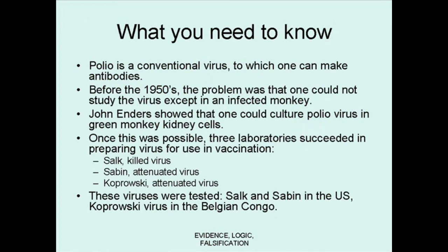You also need to know that the story relates to polio. Polio is a conventional virus to which you can make antibodies, and so in the 1950s, three groups were trying to make vaccines to it, but they couldn't manage to do so until John Enders showed that you could grow the virus in the kidney cells from a green monkey. Before that, the only way you could study polio was to infect a monkey and work with it before it died.